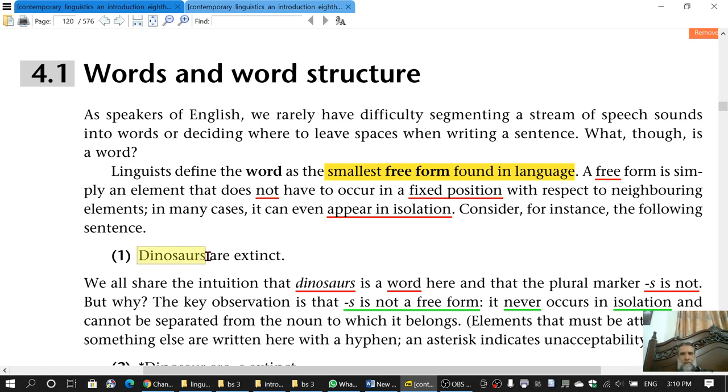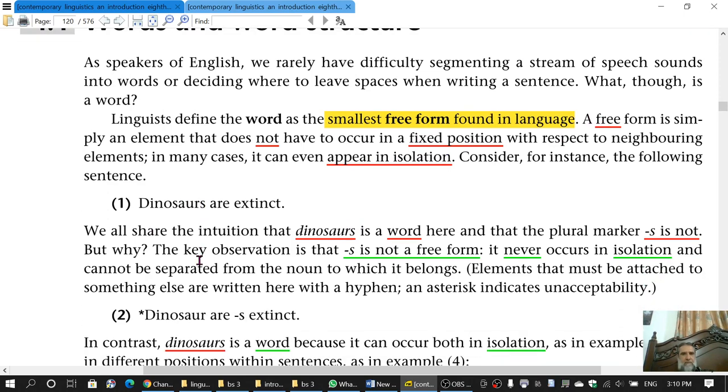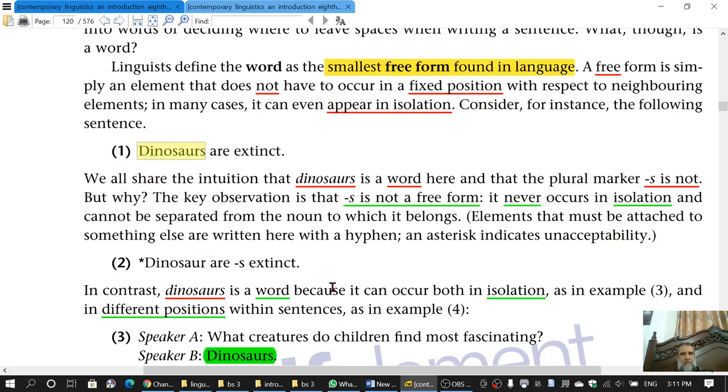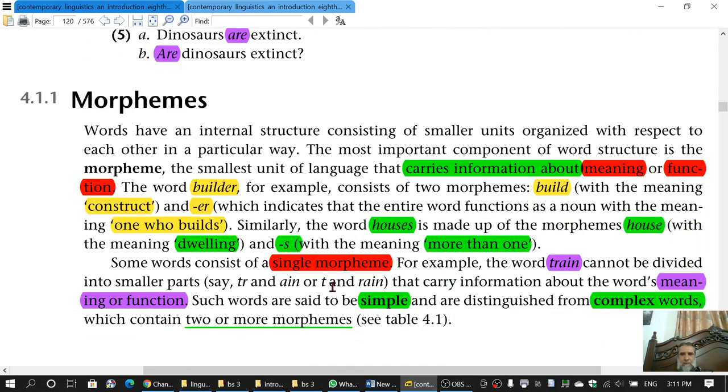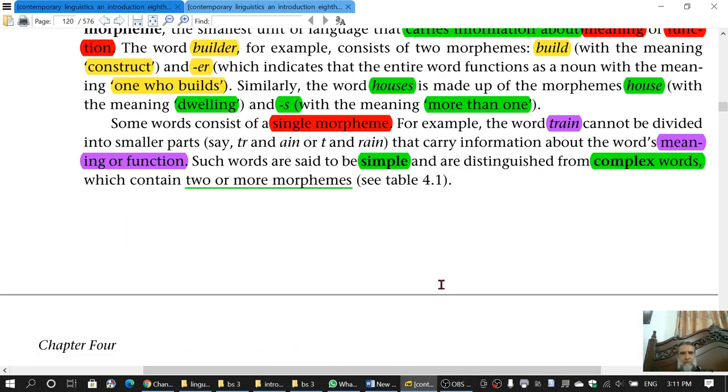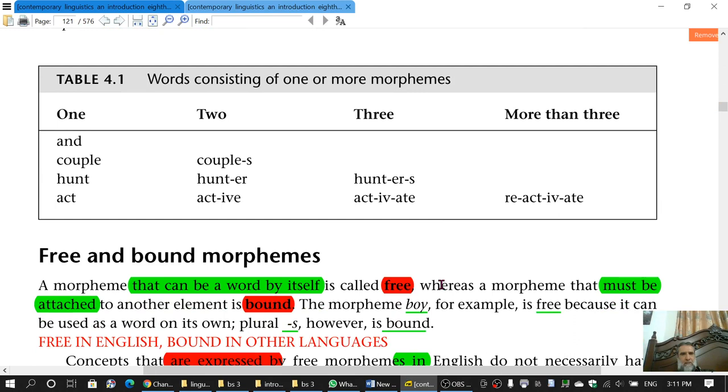This is a word because it is free, and free has got these characteristics, two characteristics. Along with S, it is a word, but we cannot call it a single morpheme. It has two morphemes, dinosaur and S, and therefore it is a complex word. So the difference between simple word and complex word.